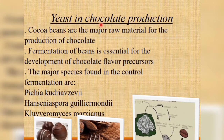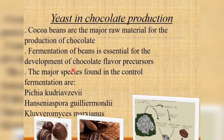Yeast used in chocolate production factories: cocoa beans are the major raw material for the production of chocolate. Fermentation of beans is essential for the development of chocolate flavor precursors. These are the major species found in the controlled fermentation process.